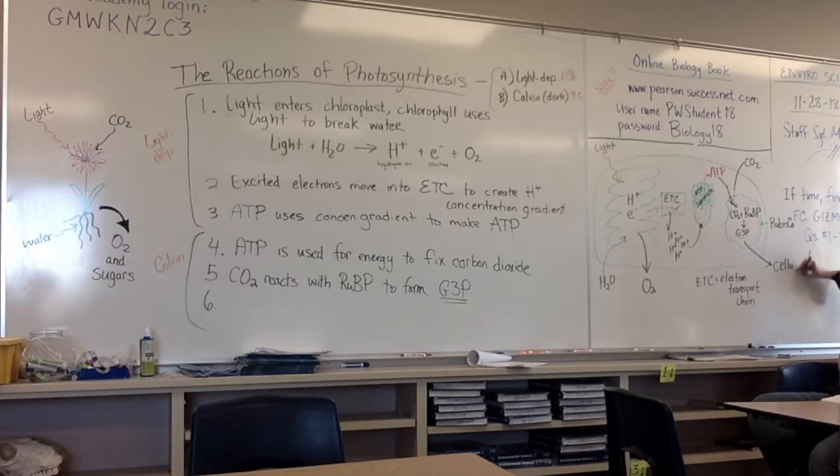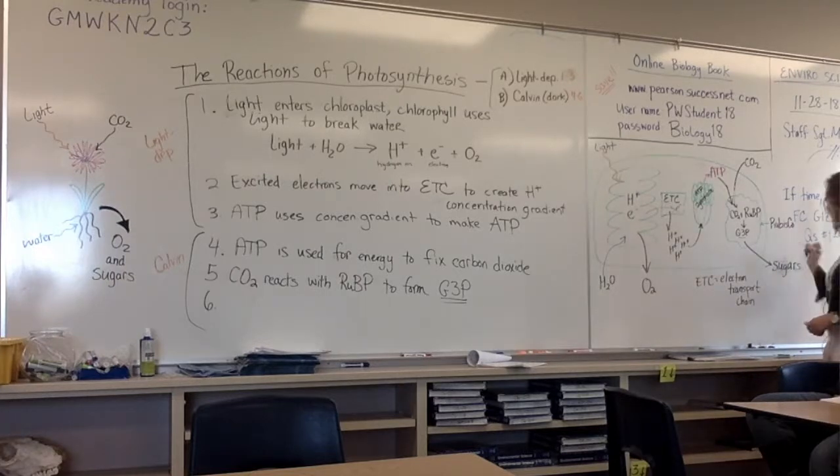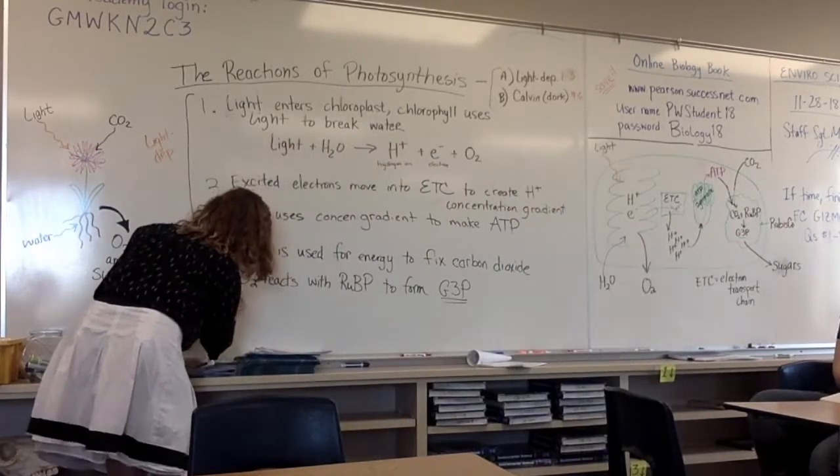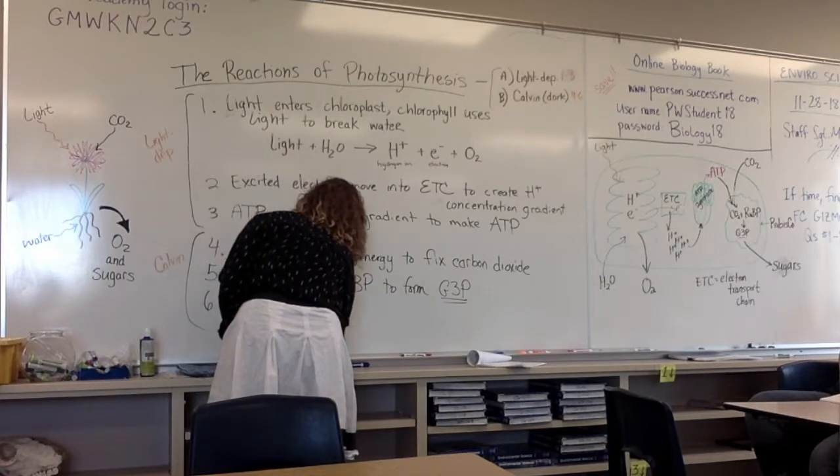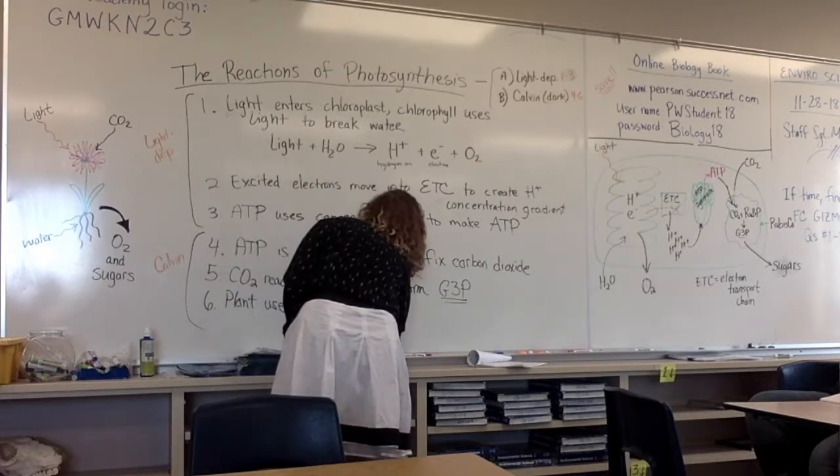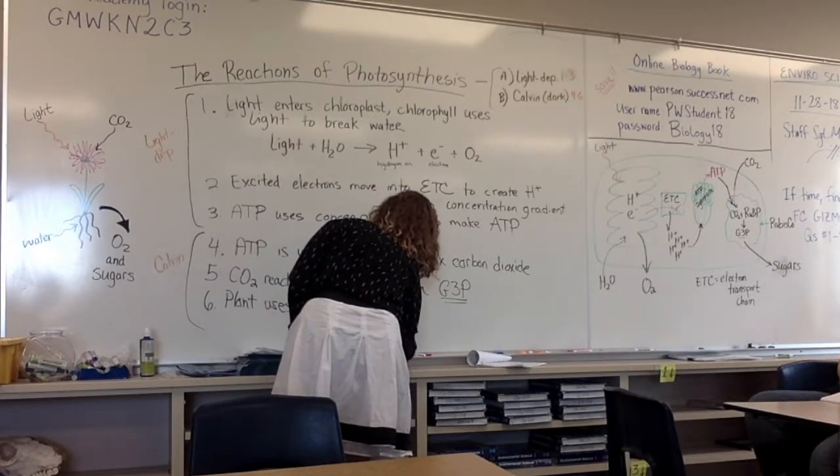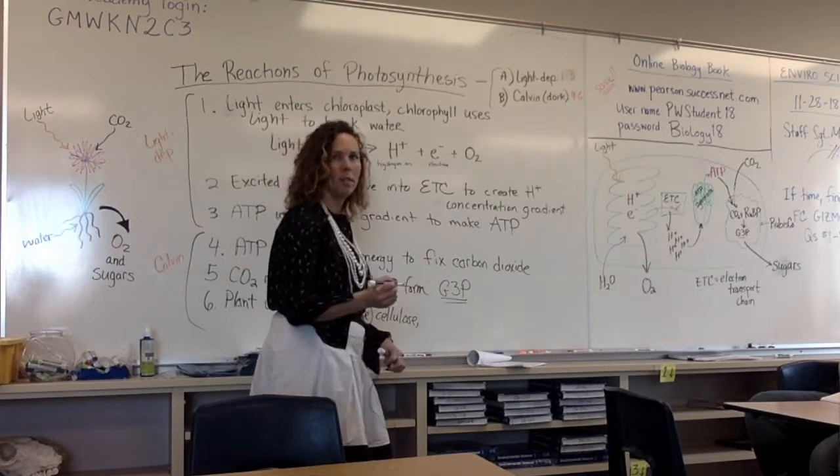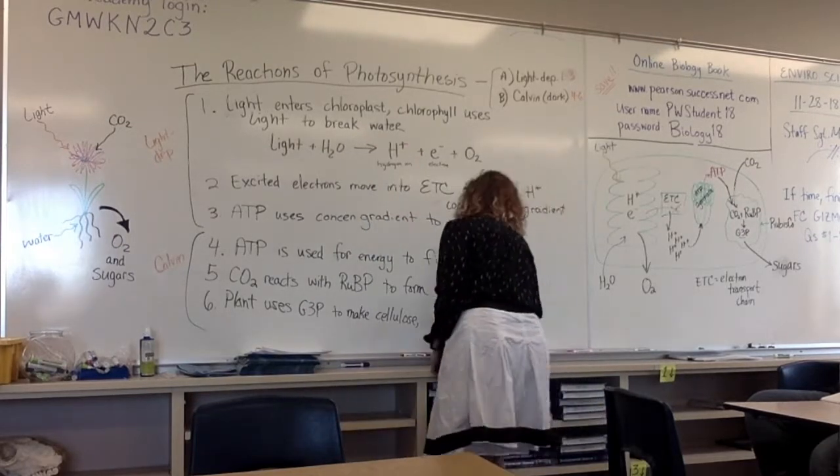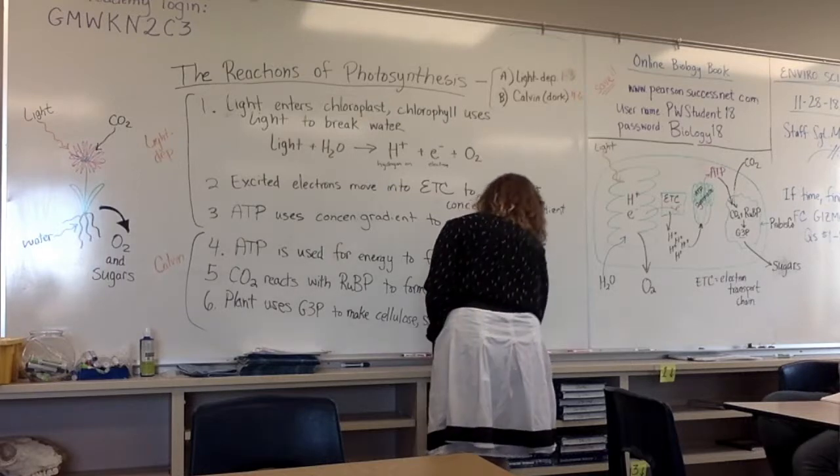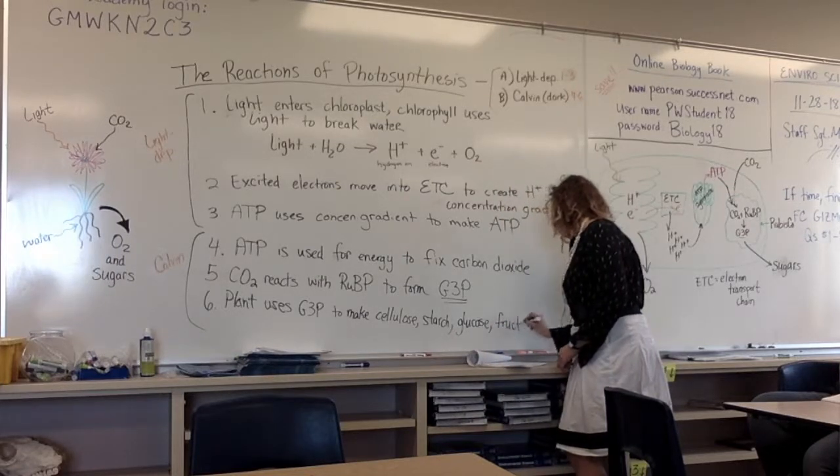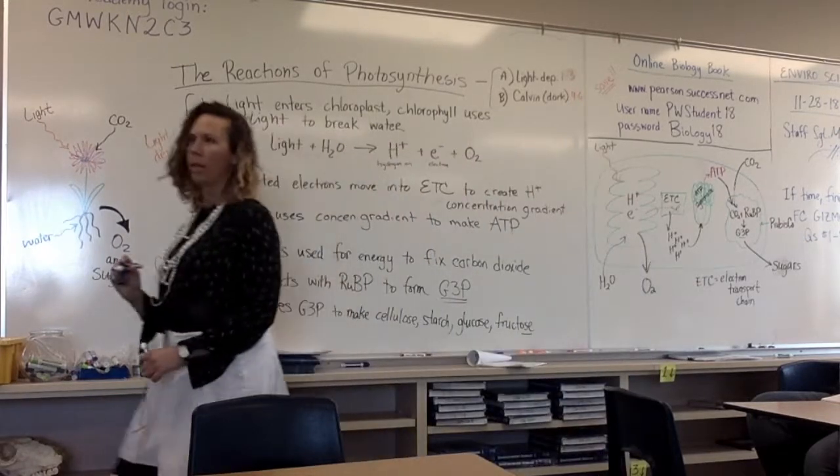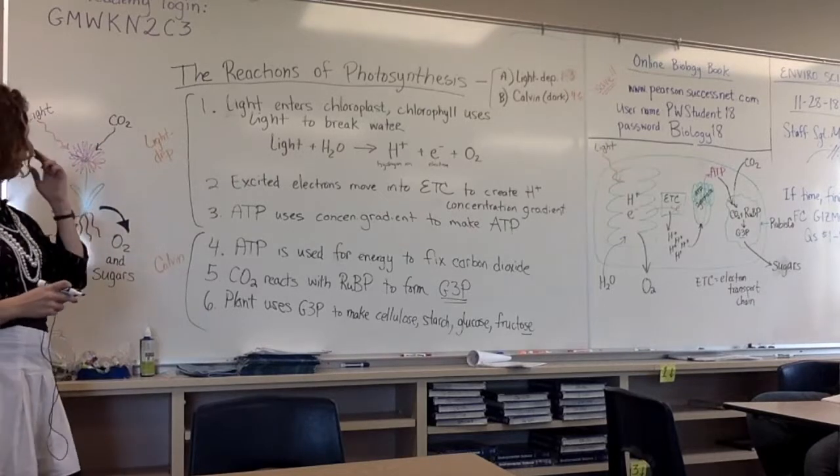G3P makes sugars, plural. The plant uses G3P to make all kinds of sugars that it needs. Uses G3P to make cellulose. Cellulose is for plant structure, like branches and tree trunks and bark. Starch is for long-term energy storage. Glucose, short-term energy storage. And fructose is the sugar that plants use to transport sugars to different parts of the plant, like leaves or flowers or whatever.